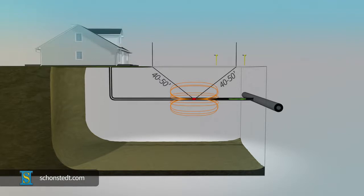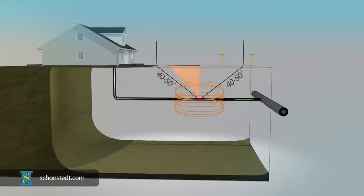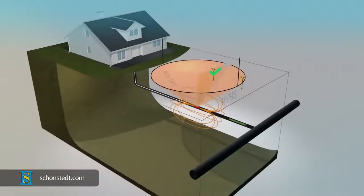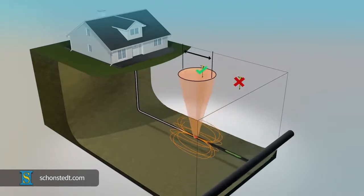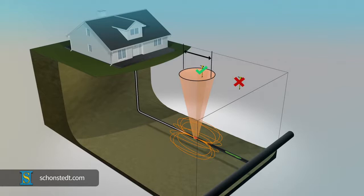As a rule, you must be within a distance of 40 to 50 feet from the sonde to be able to pick up its signal. As you can see, if the sonde is deeper, then the diameter of the proximity area on the surface is smaller.